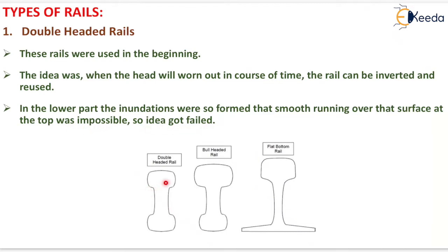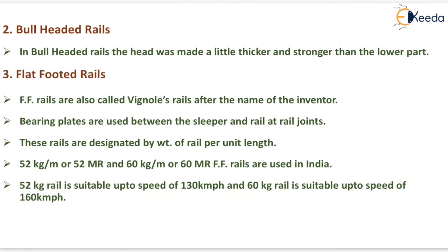This is the double headed rail. Next is the bull headed rail. In the bull headed rail, the head was made a little thicker and stronger than the lower part.